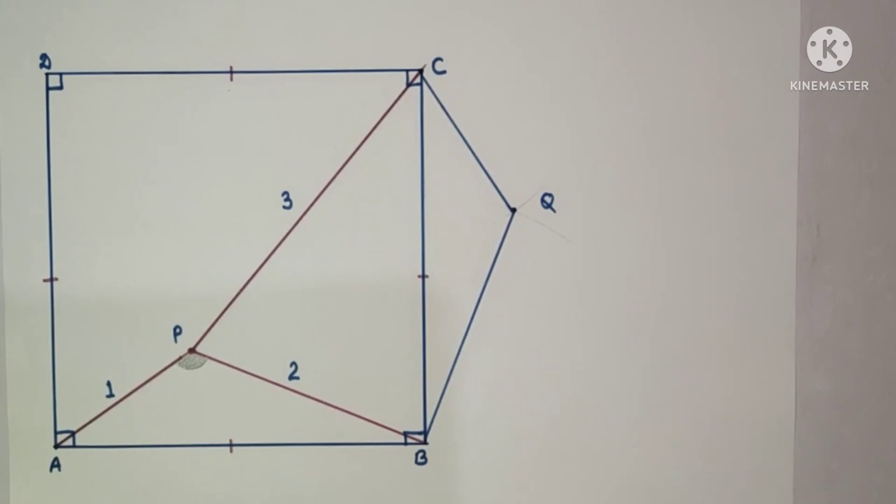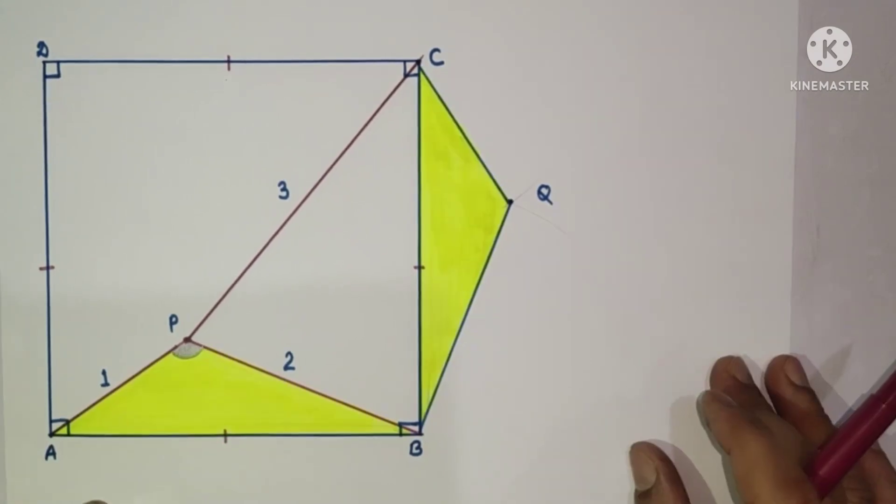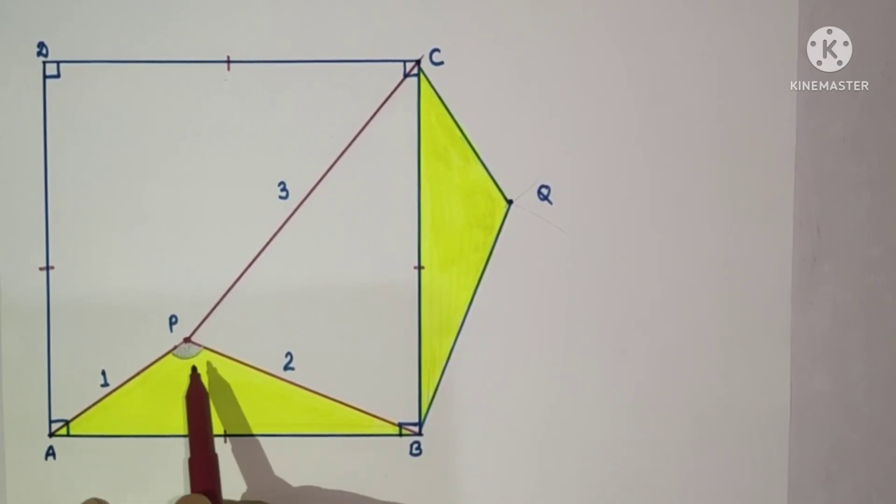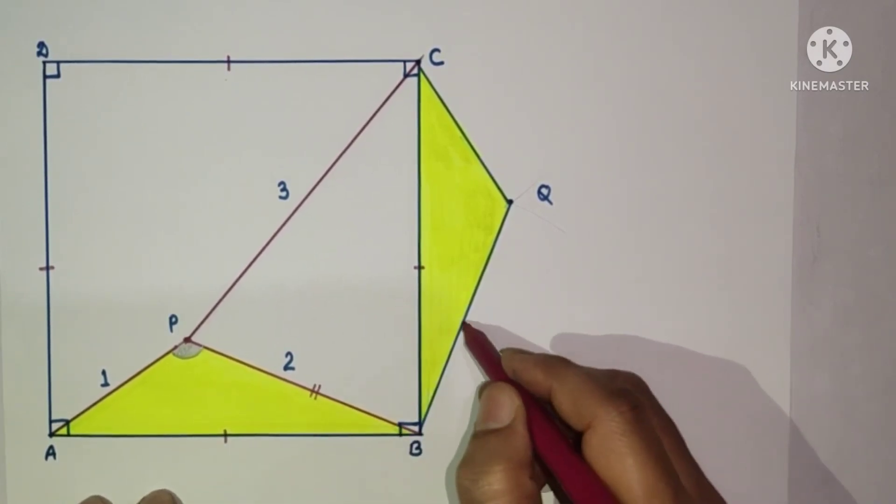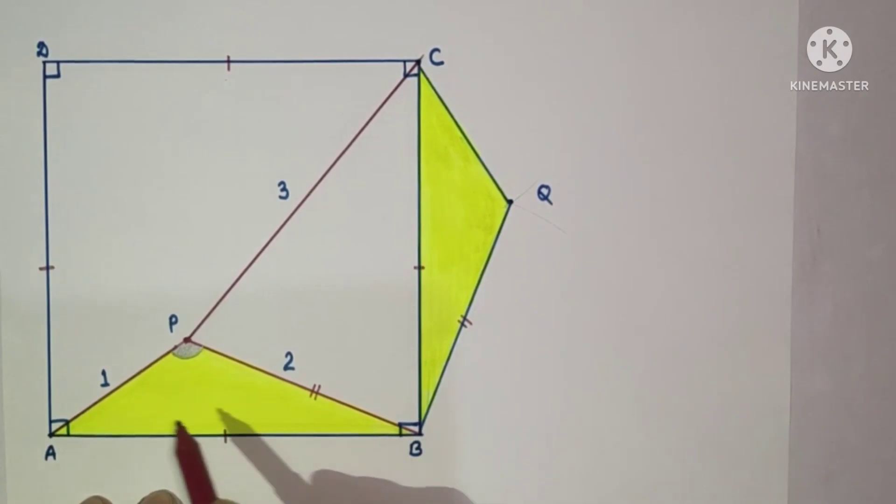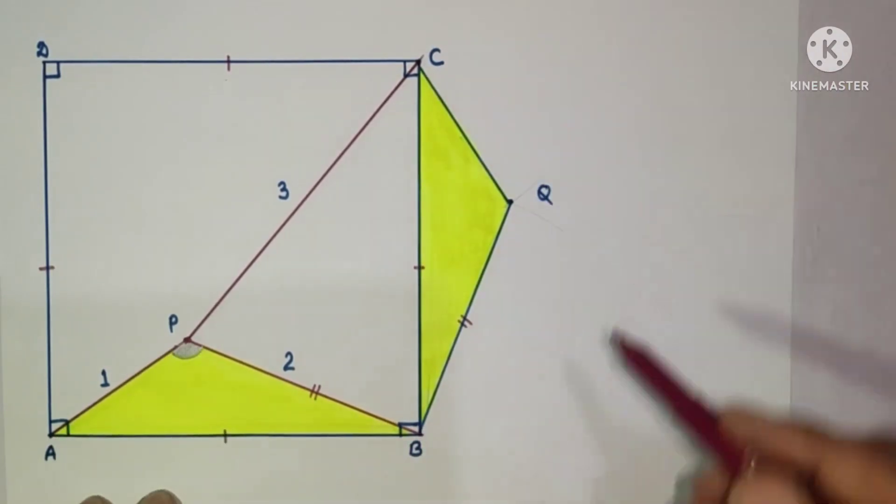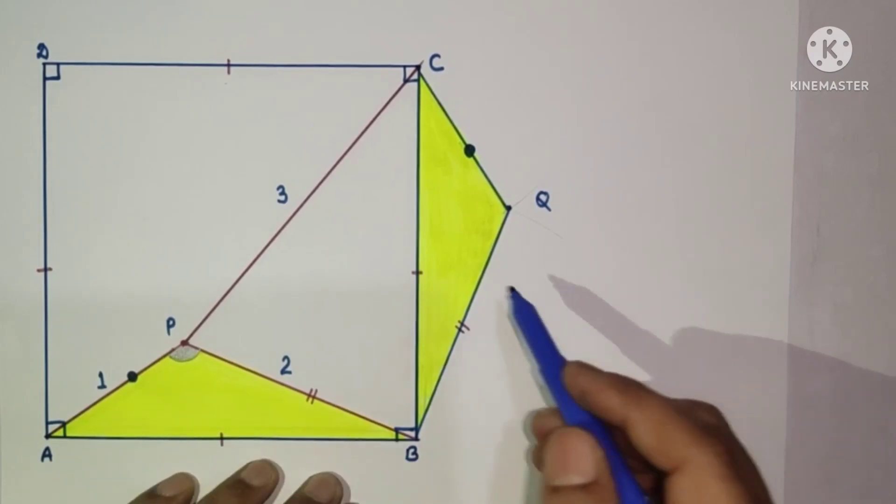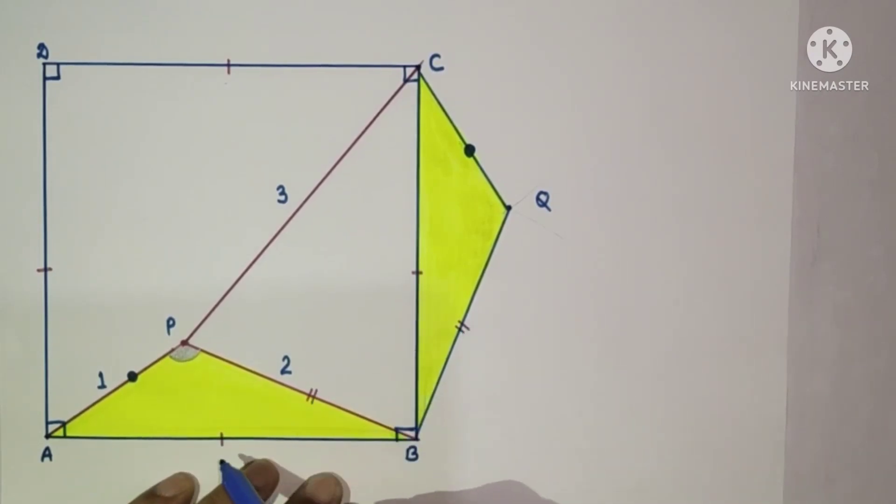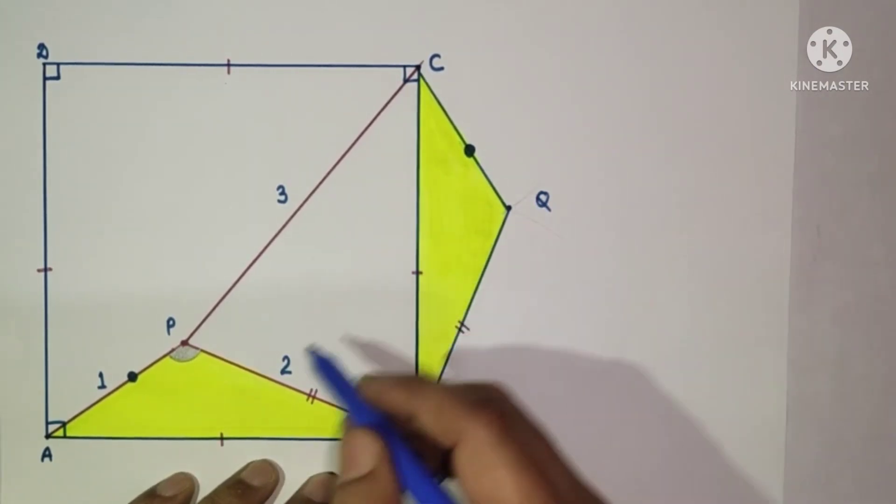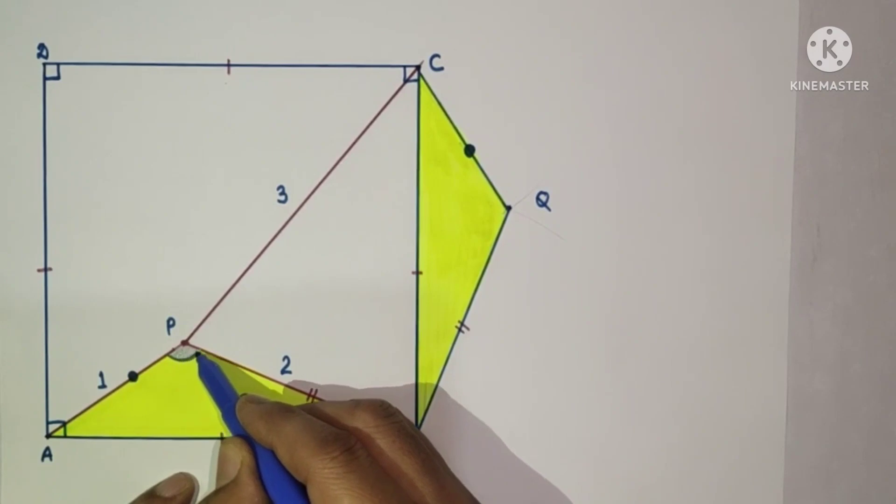In these two triangles, we have drawn BP equals BQ by construction, and PA is equal to CQ. So by SSS test, side-side-side, these two triangles are congruent, and this angle is equal to this angle.